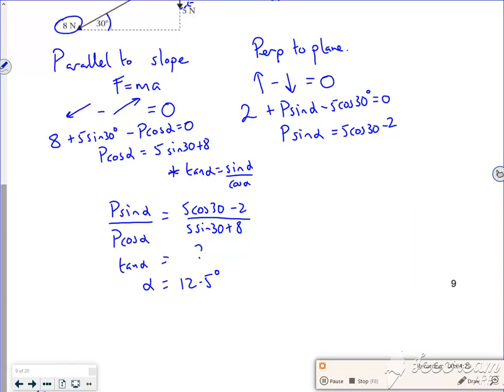And then I can sub that back into either equation. So if I sub it back into the P sin, so P sin alpha is 5 sin 30 plus 8. I've actually got P sin 12.5 is 5 sin 30 plus 8. If I divide through by the sin 12.5, it gives me P out as 10.8 newtons. And the video is going to end there. See you later.